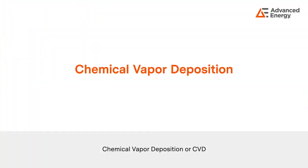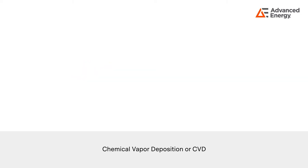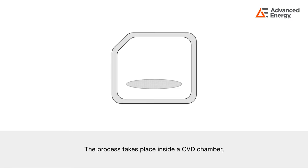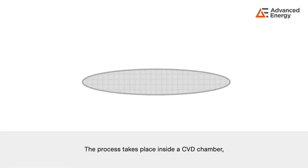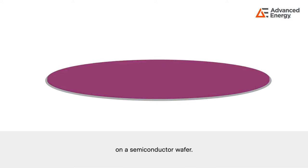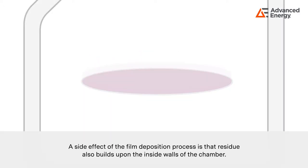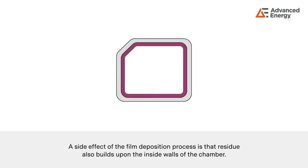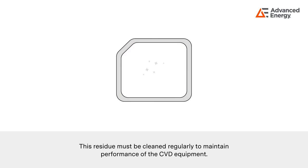Chemical vapor deposition, or CVD, is a key step in the semiconductor manufacturing process. The process takes place inside a CVD chamber where a solid uniform film is deposited on the semiconductor wafer. A side effect of the film deposition process is that residue also builds up on the inside walls of the chamber.